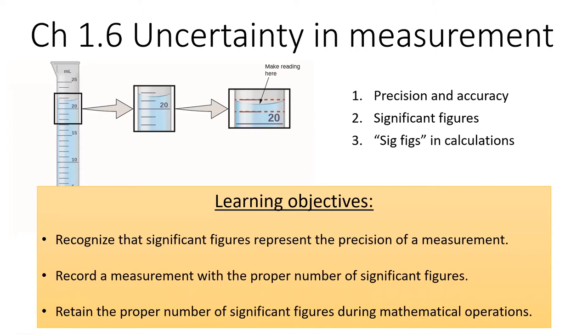In this lesson, we will grapple with a big issue in science. No measurement is absolutely perfect. We will first discuss the difference between accuracy and precision, and I'll share how scientists use numbers called significant figures to communicate the precision of measurements. These sig figs, as they're called, come with rules to follow during mathematical operations like addition and multiplication.